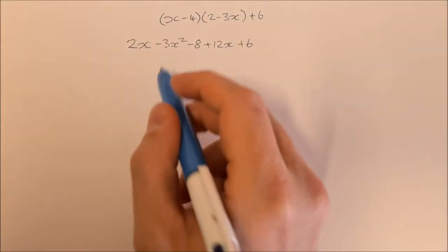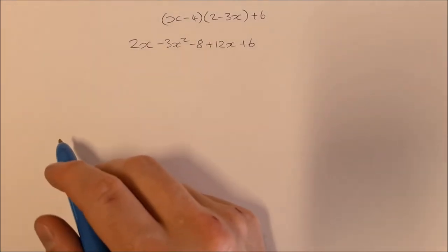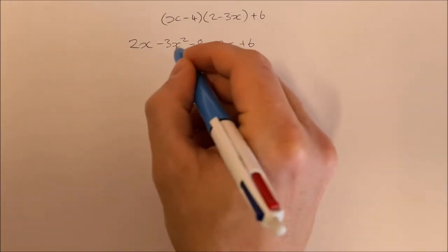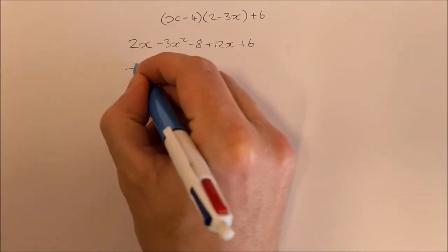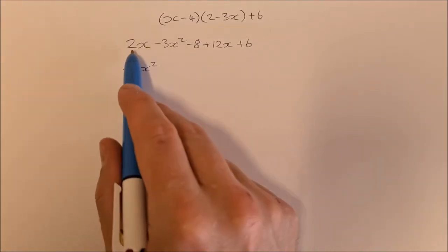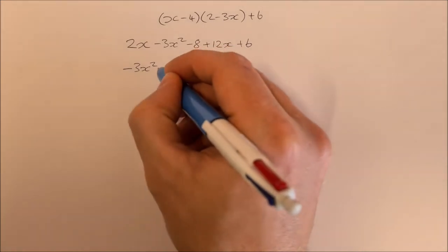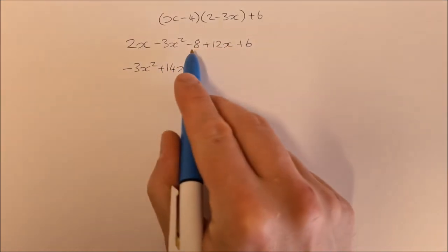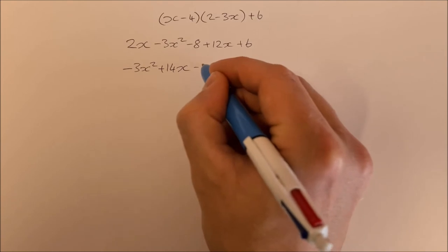Okay, so first thing we're going to do is write it in our general form. So that would be the x squared out front, so that's minus 3x squared. Then we'd have a look at our x's, so we've 2x plus 12x, that's plus 14x. And then we have minus 8 plus 6, so that's minus 2.